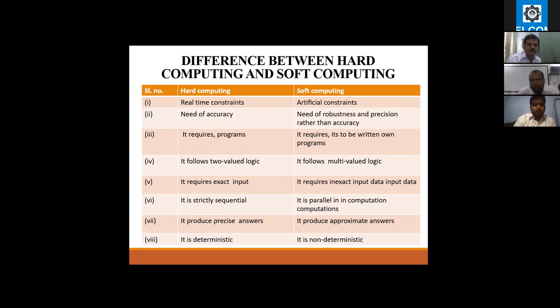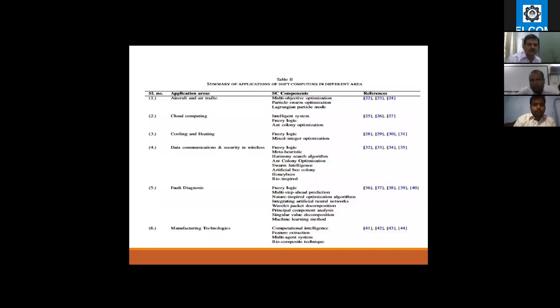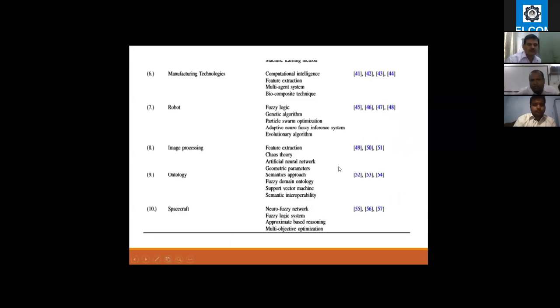Here is the summary of soft computing in different areas where you can use these techniques: artificial aircraft, cloud computing, cooling-heating systems, fault diagnosis systems. There are major issues you can use in application areas. There are some components like robot fuzzy logics, genetic algorithms, ANN algorithms for optimization, and spacecraft.